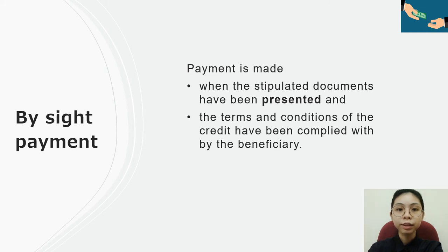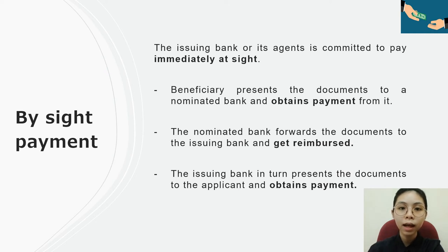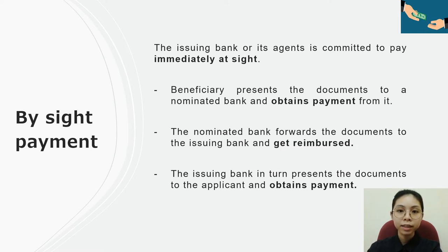Under a sight documentary credit, payment is made when the stipulated documents have been presented and the terms and conditions of the credit have been complied with by the beneficiary. The issuing bank or its agent is committed to pay immediately at sight. The beneficiary will present the documents to the nominated bank and obtain payment from it, then the nominated bank forwards the documents to the issuing bank and gets reimbursed. The issuing bank in turn presents the documents to the applicant and obtains payment.